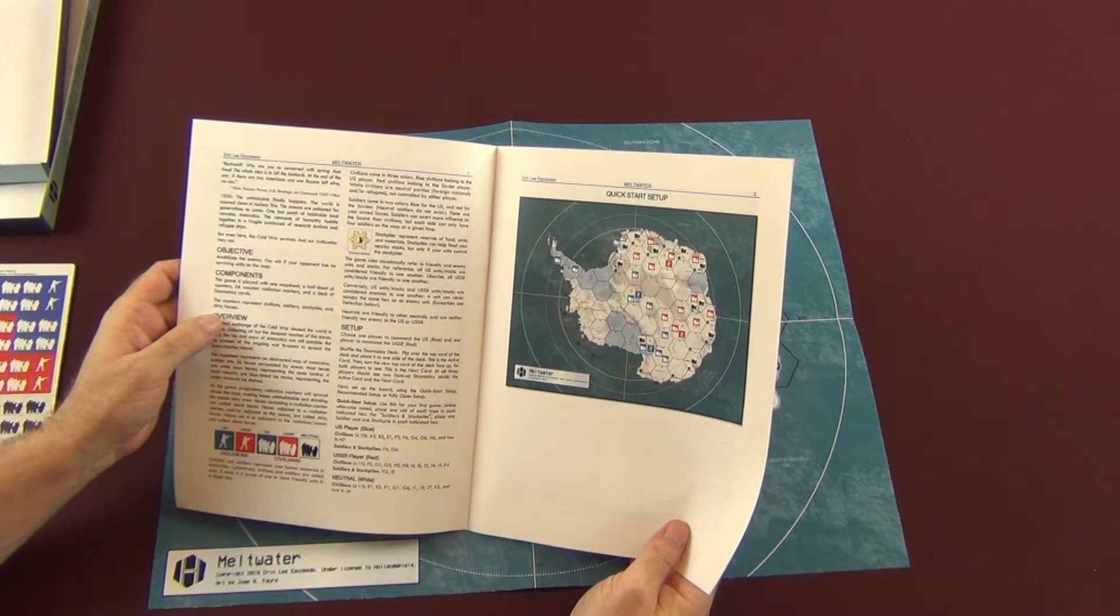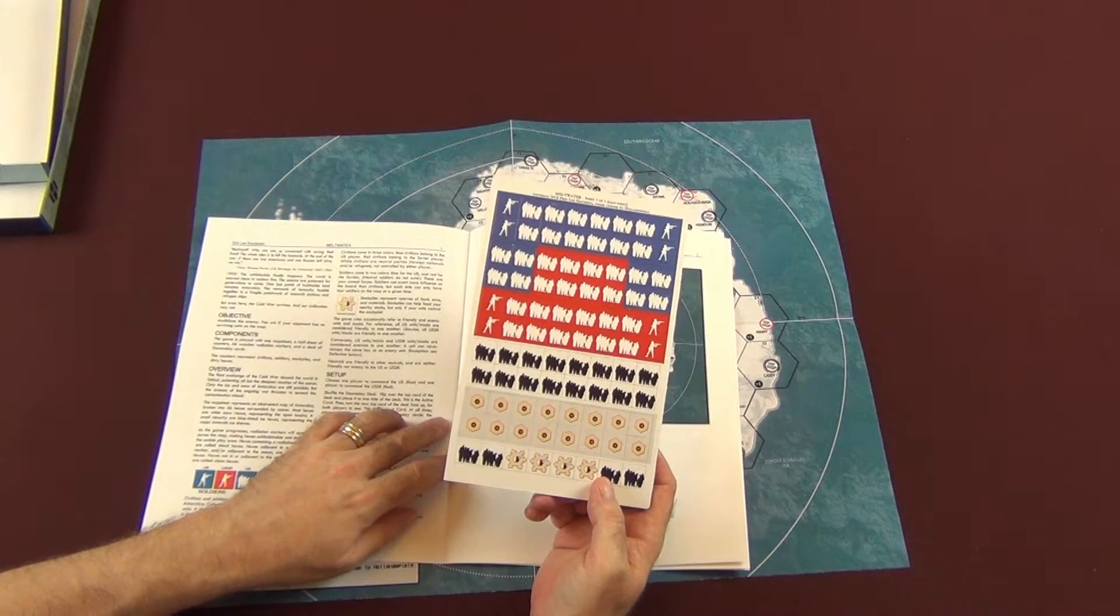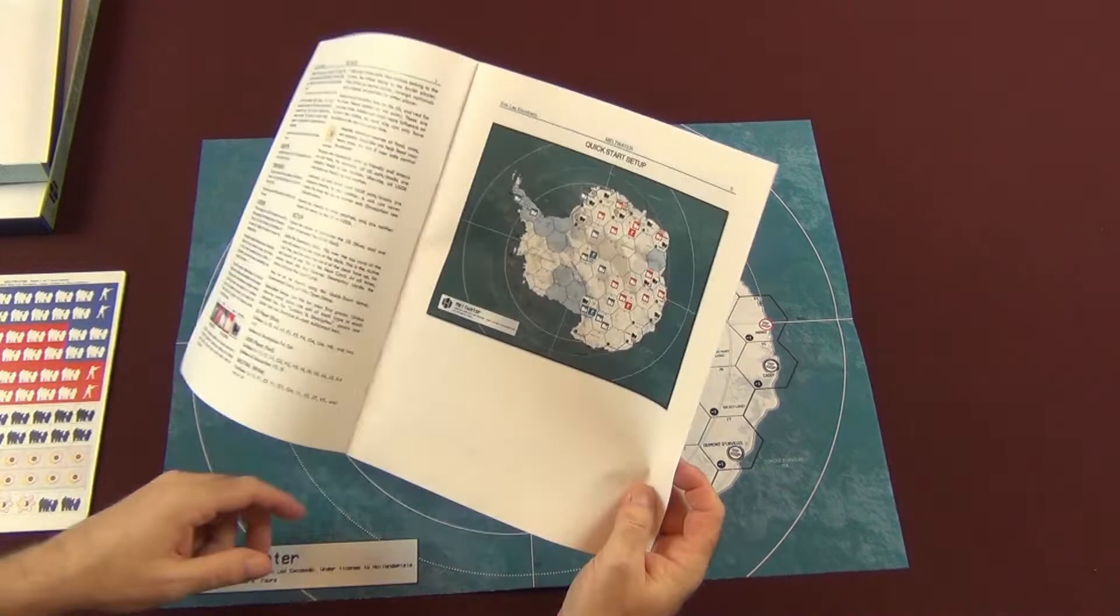The counters represent civilians, soldiers, stockpiles, and dirty hexes. So you're also going to have stockpiles of goods, which are these. Here it looks like that's your reserves of food, arms, and materials. That's what keeps you guys going.